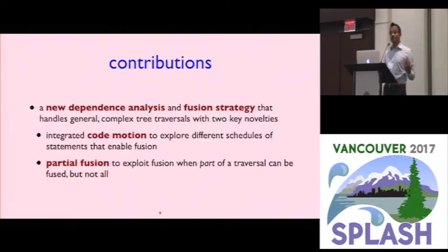So what we do is we've come up with a new dependence analysis and fusion strategy that lets you take general imperative tree traversals and fuse them together automatically. And this is enabled by two key novelties. One is an integrated code motion pass that basically figures out what order you need to schedule your statements to preserve dependencies, and to expose more opportunities for fusion, a partial fusion optimization that basically says that in some cases I might not be able to fully fuse two traversals, but there are times when these two traversals are accessing parts of the tree where it's legal to do them at the same time. So we can figure this out. So let me explain to you exactly how these kinds of things work.